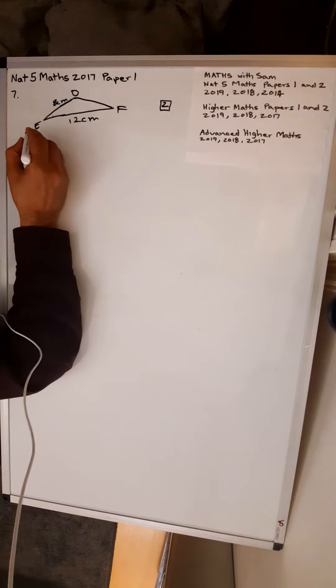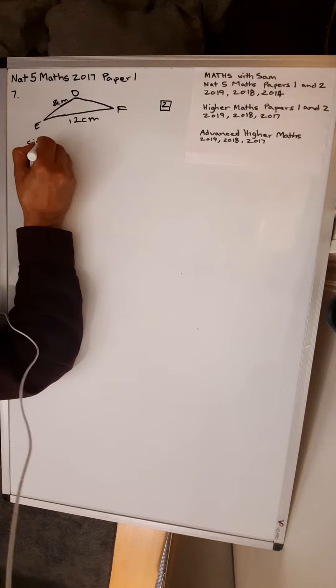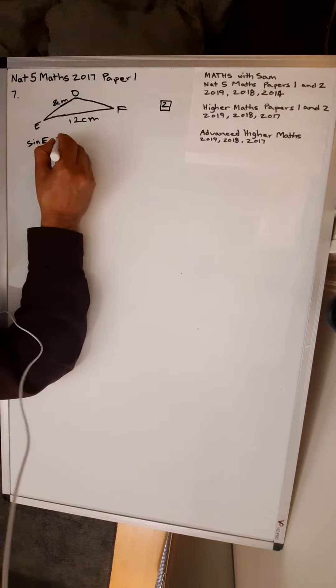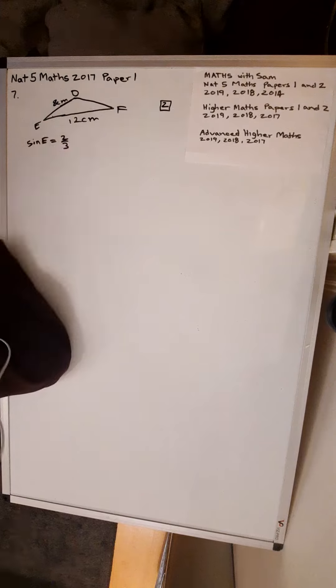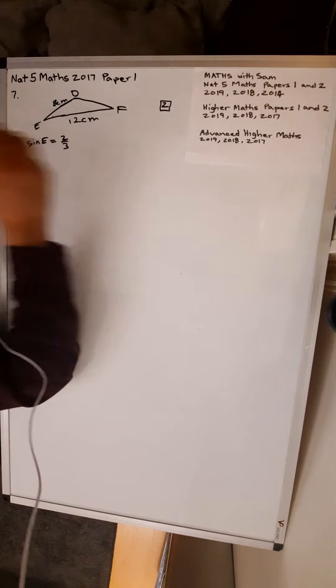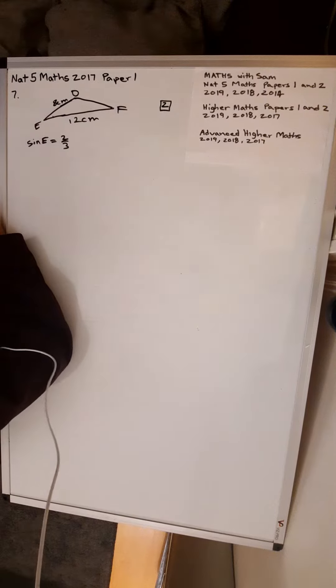Sine E is 2 over 3. Calculate the area of triangle DEF for 2 marks. This is maybe a 3 mark question.